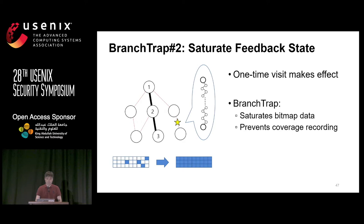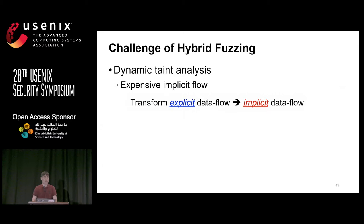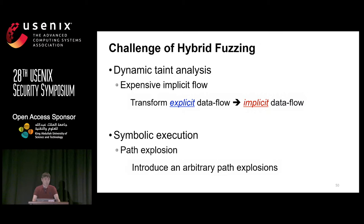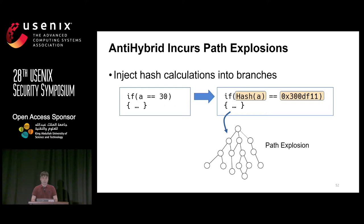Finally, let me introduce the anti-hybrid component, which hinders hybrid fuzzing. For dynamic data analysis, tracing implicit flows is very expensive — so we transform existing explicit data flow into implicit data flow. For symbolic execution, path explosion is a well-known difficult problem — so we introduce arbitrary path explosion. If there is an input character variable, we define another variable called anti-DTA and infer the contents of the original input to assign it to the new variable. Since there is no direct relationship between the two variables, dynamic taint analysis cannot taint the new variable. For path explosion, we transform branch conditions to use hash operations, causing symbolic execution engines to time out.